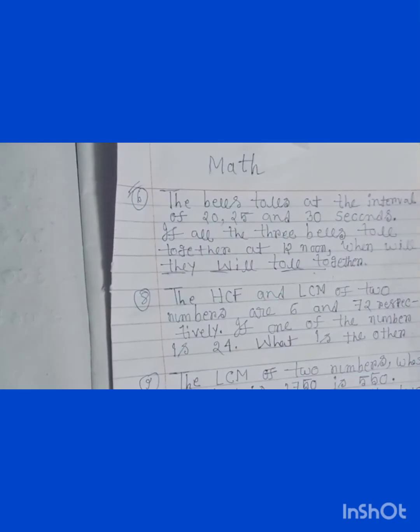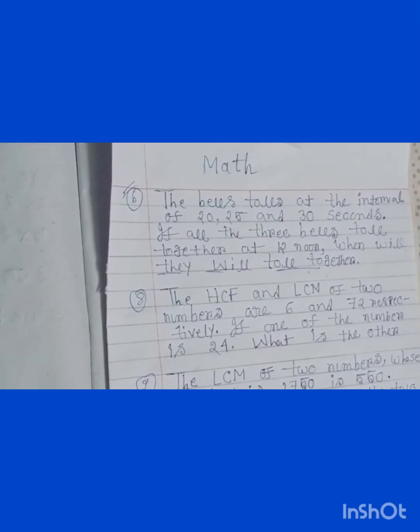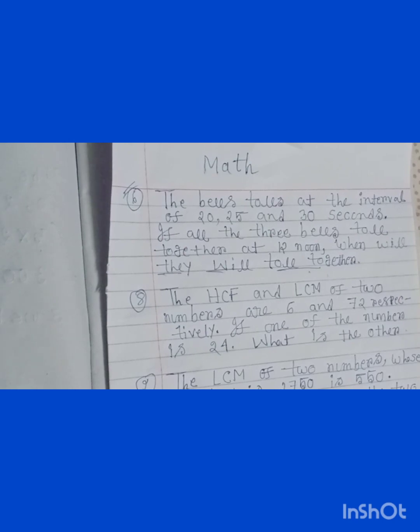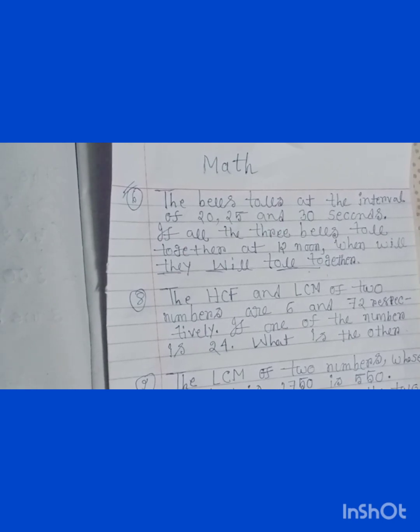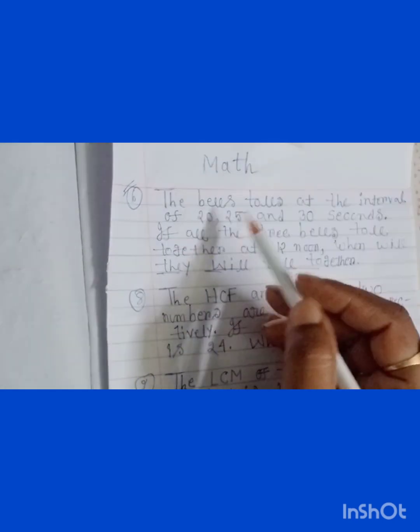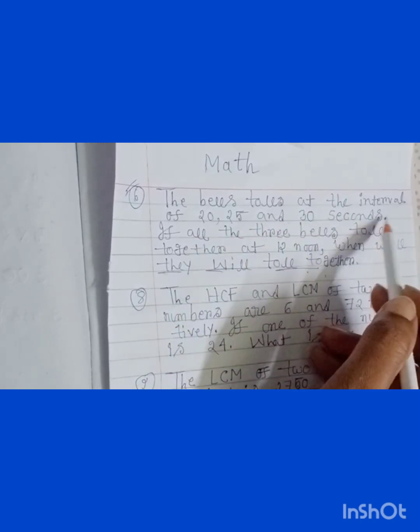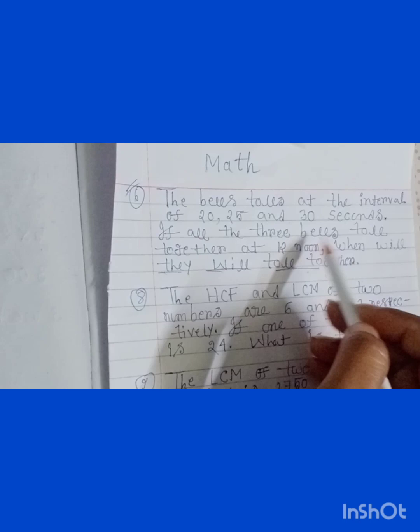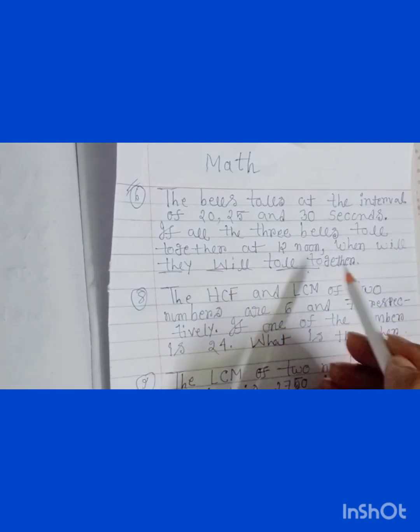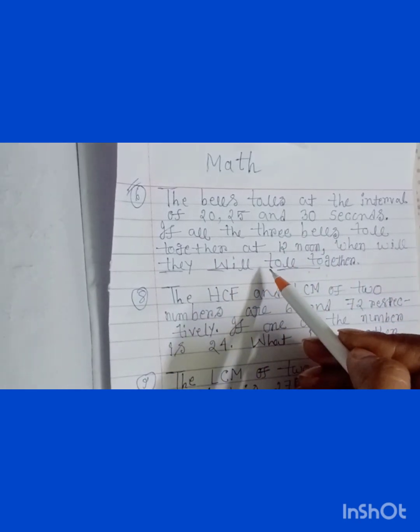Hello to all ICSE board class 5 students. Today's subject is math and you are given three problems, so I am going to solve these three problems. The first problem is: the bells toll at the interval of 20, 25, and 30 seconds. If all the three bells toll together at 12 noon, when will they toll together?